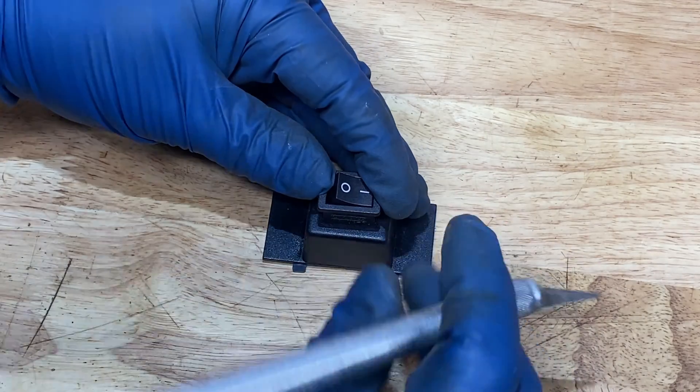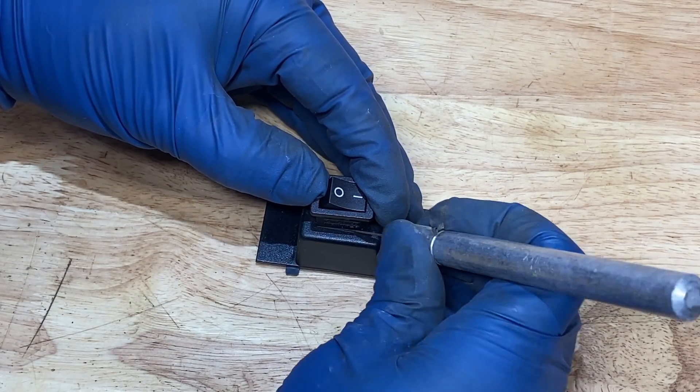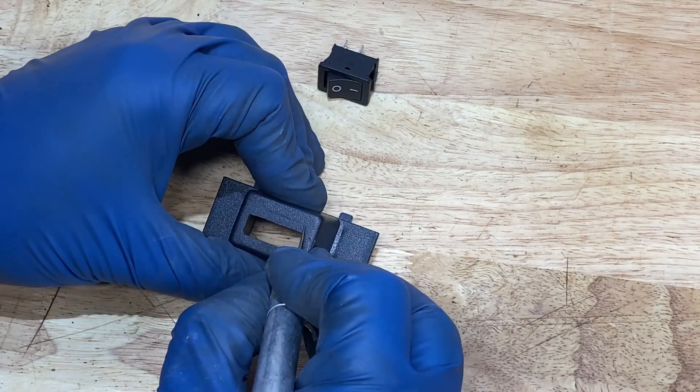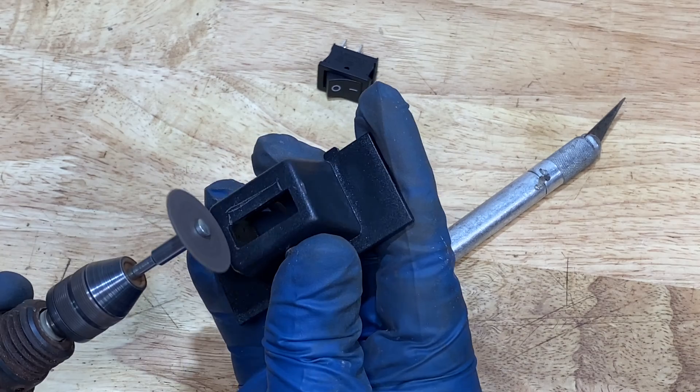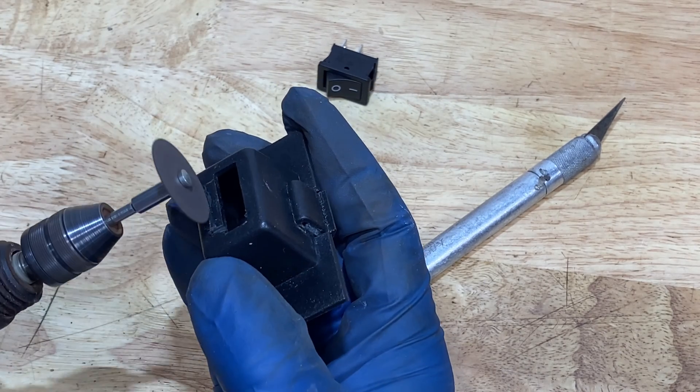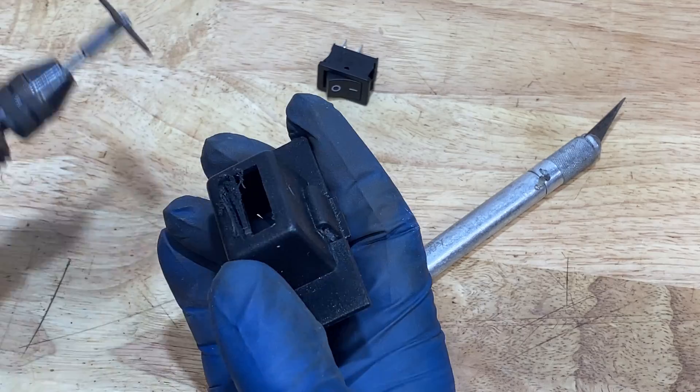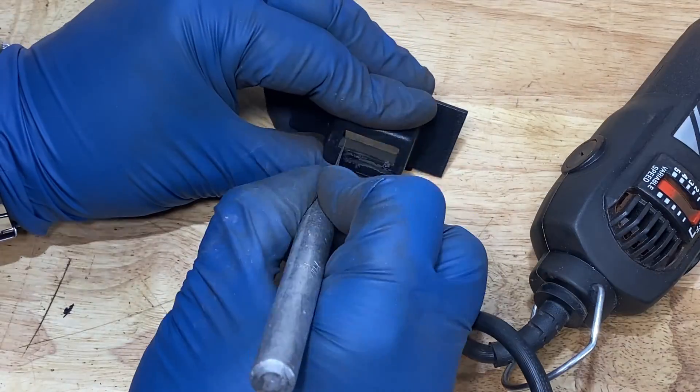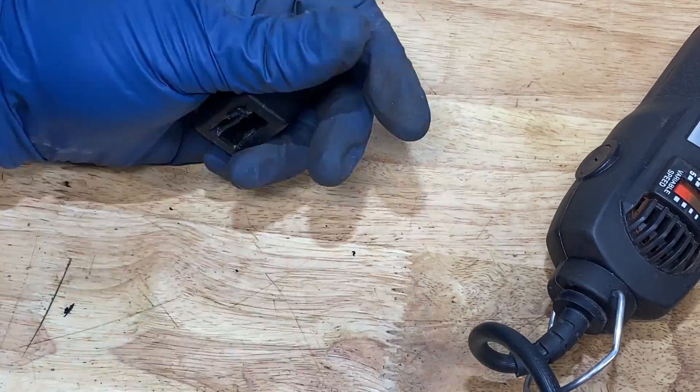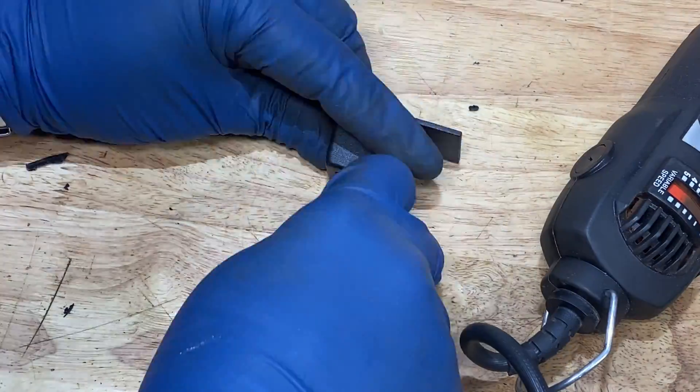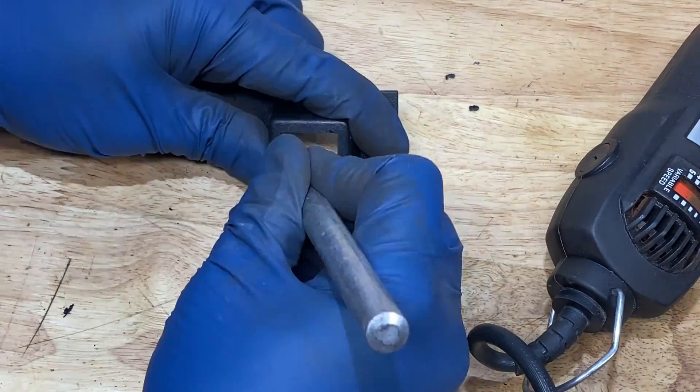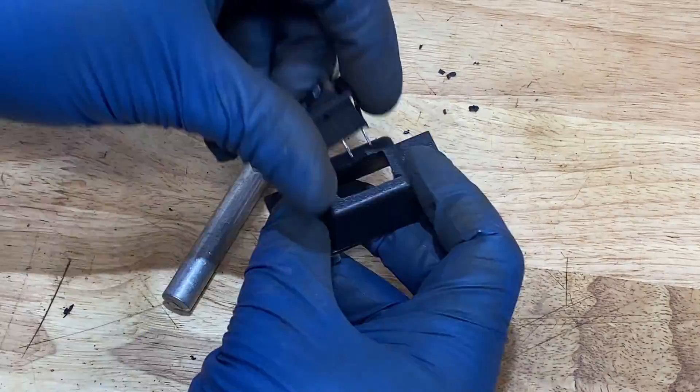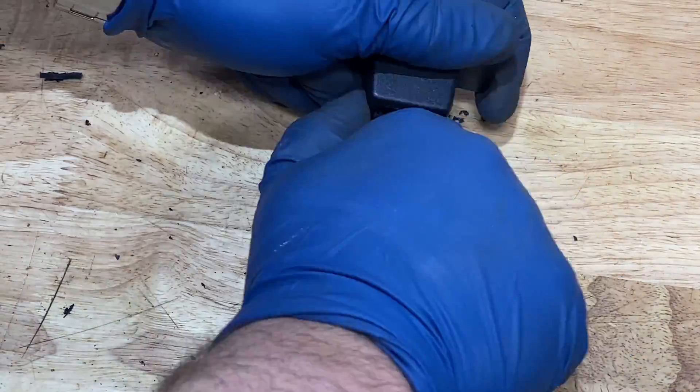Step one was to outline the new switch onto the housing, paying close attention to make sure the outline wasn't bigger than the flange or the switch wouldn't sit atop the housing. I started with the Dremel but realized its cuts were too big, so I switched over to an exacto knife to make more precise and fine-tuned cuts, periodically checking with the new switch to see what alterations still needed to be made and also to ensure I didn't overshoot and make the hole too big so that the switch would not sit properly.